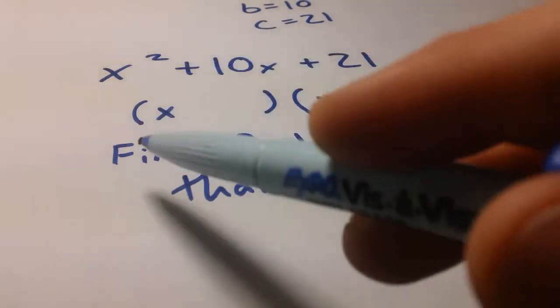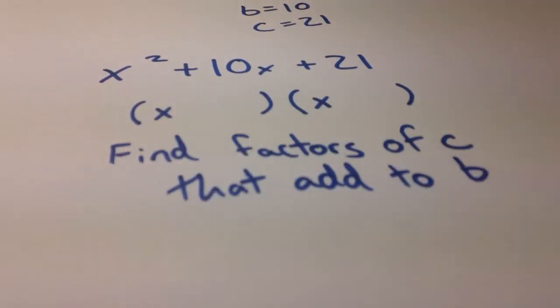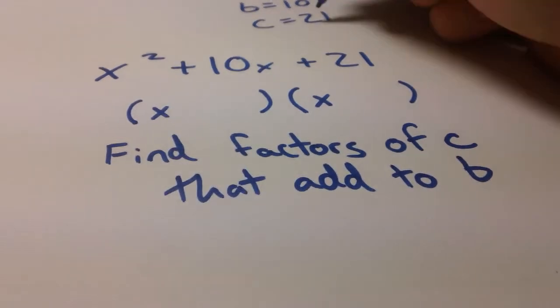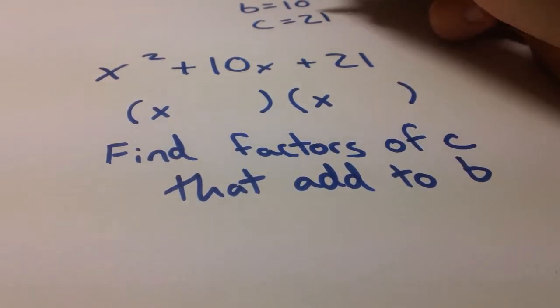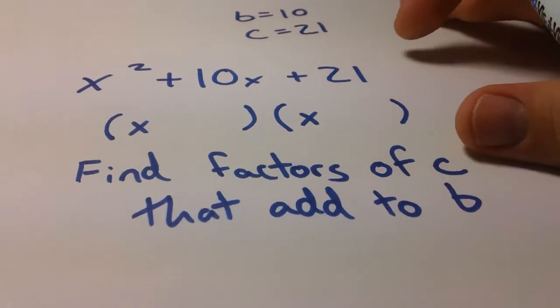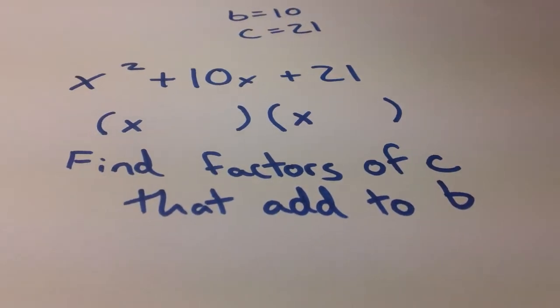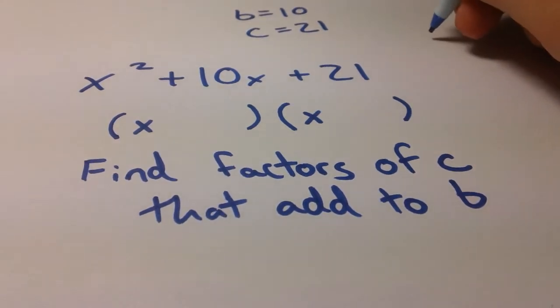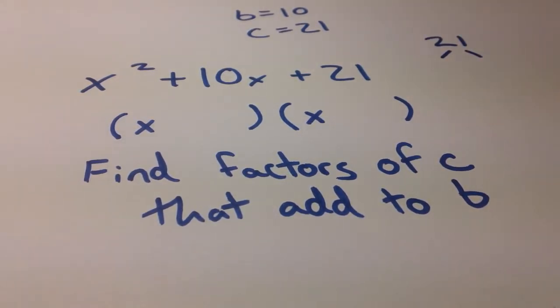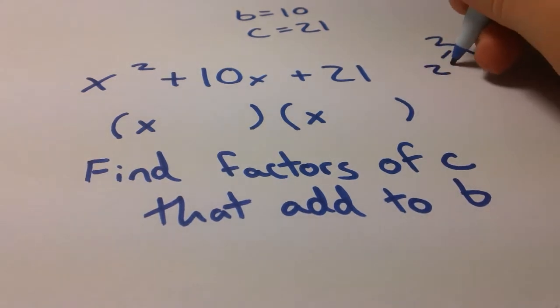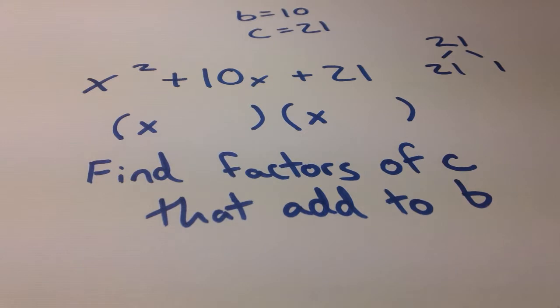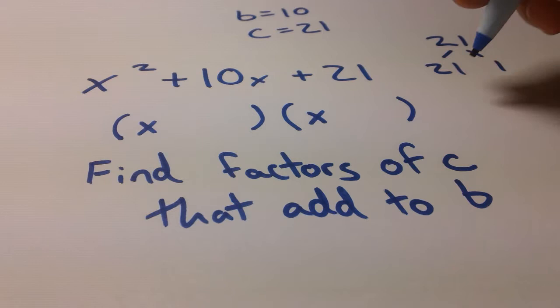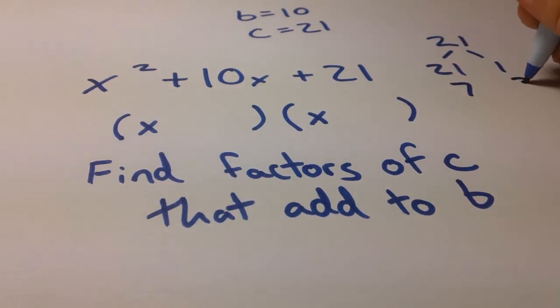So, we need to find factors of 21 that add to 10. I'm sure several of you already have this down in your head, but I'm just going to go through a little process here. So, we have 21. We want to come up with what factors could there be in 21. There's always the obvious, well, 21 and 1, right? The only other one I can think of is 7 and 3.